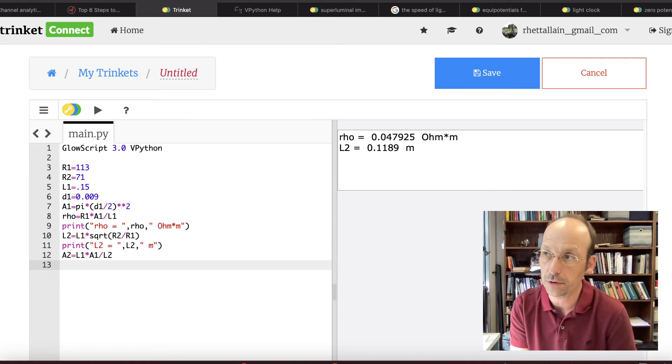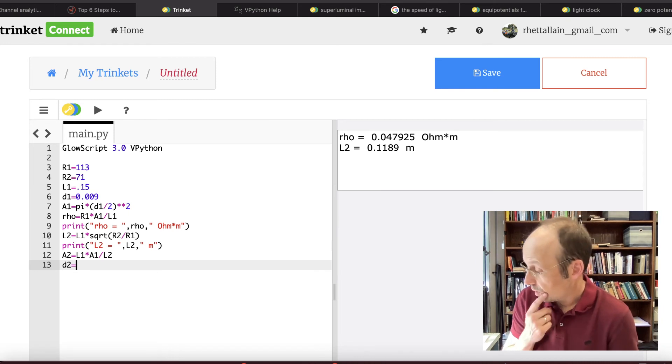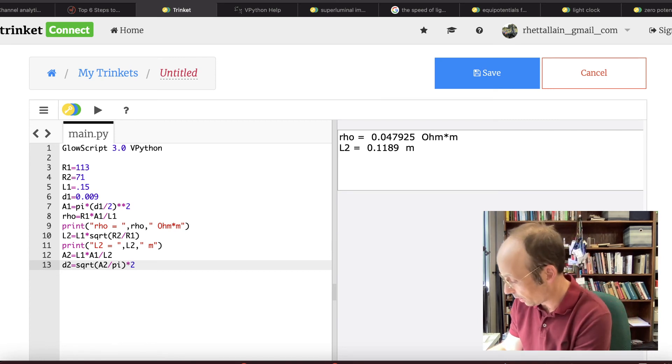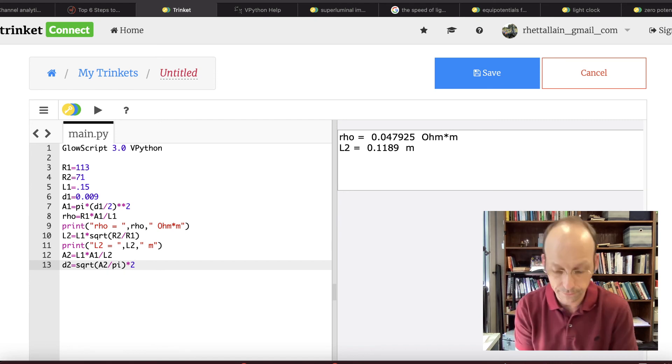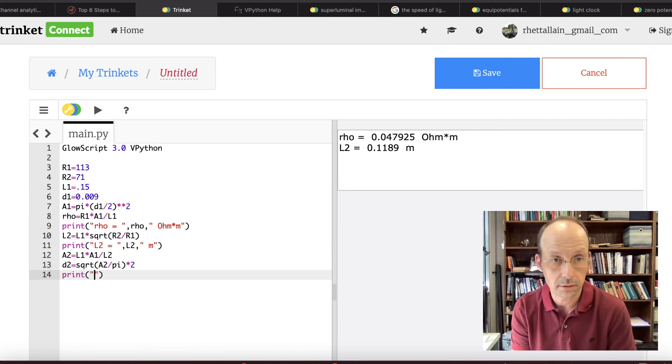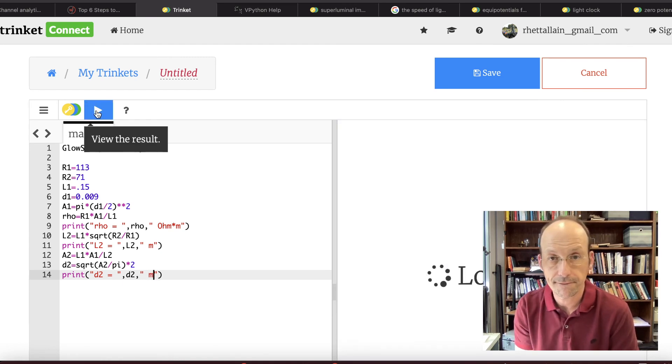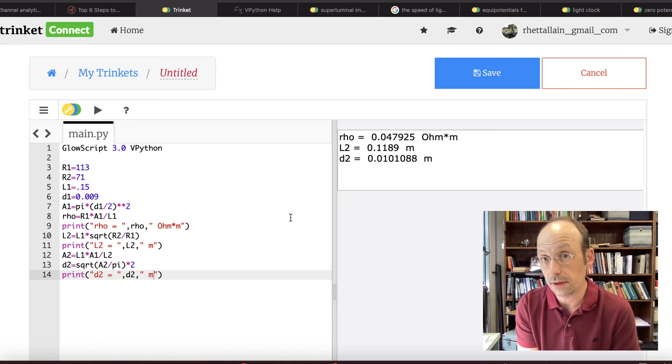And let's print the diameter. So let's say D2 equals, it's going to be the square root of A2 divided by pi. And that's the radius and then I need to multiply that by 2. So A equals pi D over 2 squared. So I divide by pi. I take the square root and that's right. So let's print the diameter. D2 equals D2 meters. And so it is indeed thicker.